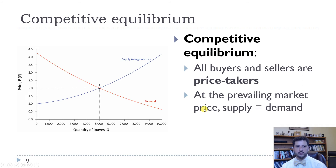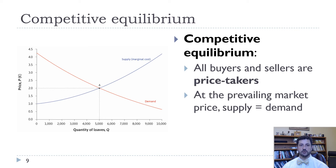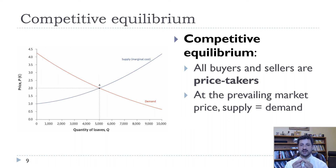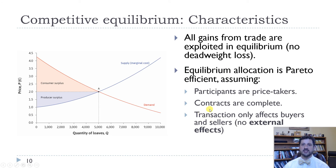If we think about the competitive equilibrium — remember point A, where the quantity demanded equals the quantity supplied — here we have a price of two euros and 5,000 loaves of bread. All buyers and sellers are price takers, meaning all bread is sold at two euros. Buyers can buy as much bread as they want at two euros, and sellers can sell as much as they want at two euros. That price clears the market — all buyers and sellers who want to transact at two euros can find each other — which means our competitive equilibrium is efficient.